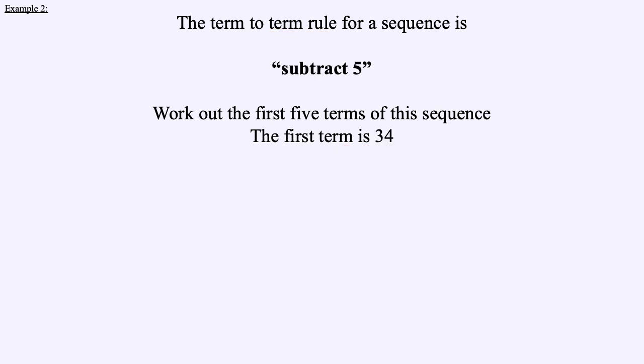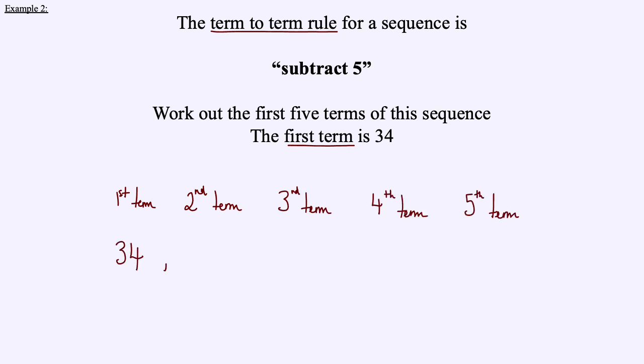For question 1, the term-to-term rule is subtract 5 and the first term is 34. We want the first five terms. So 34 take away 5 gives 29, then 29 subtract 5 gives 24, then 24 subtract 5 gives 19, and 19 subtract 5 gives our fifth term, which is 14.